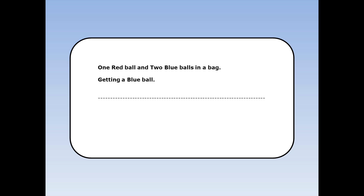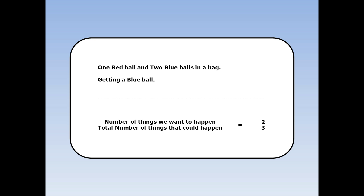Again, I've got 1 red ball and 2 blue balls in the bag. I'm going to pick a ball at random. What's the chance of getting a blue ball? Well, this time, the number of things we want to happen is 2, because there are two blue balls. The total number of things that could happen is 3, because there are three balls altogether. The probability is 2 over 3, or two thirds.